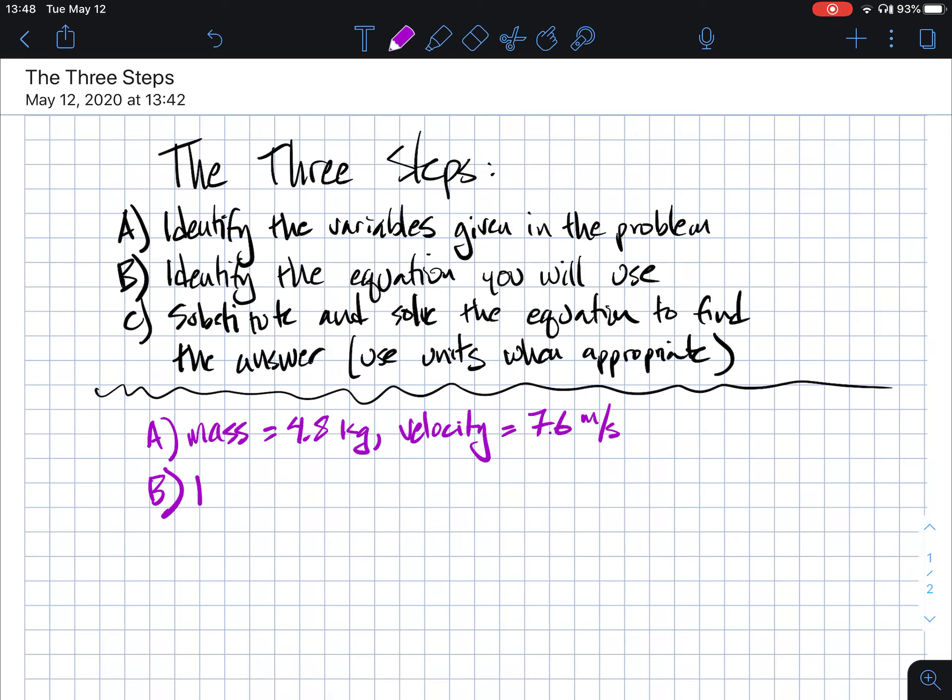So the equation we gave you was kinetic energy is equal to 0.5 times the mass of the moving object times the velocity again. So that's the velocity squared. You're multiplying it by the velocity twice. All right.